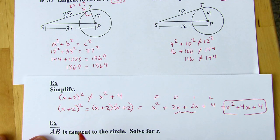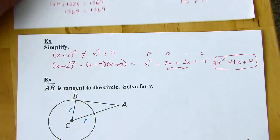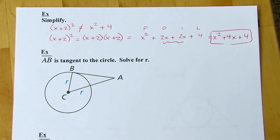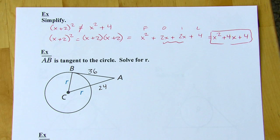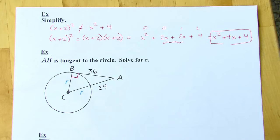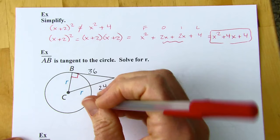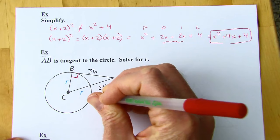If you just square both terms, you miss out on the middle terms — the outer and the inner — so just beware. That's going to come up in this next set of problems. The problem says AB is tangent to the circle — solve for R. So the distances are 24 and 36. Since it's tangent, right off the bat I can say it's going to be perpendicular to the radius it connects to. So I've got a right triangle, and that means I can use the Pythagorean theorem. Be careful: 24 isn't the hypotenuse — R plus 24 is.